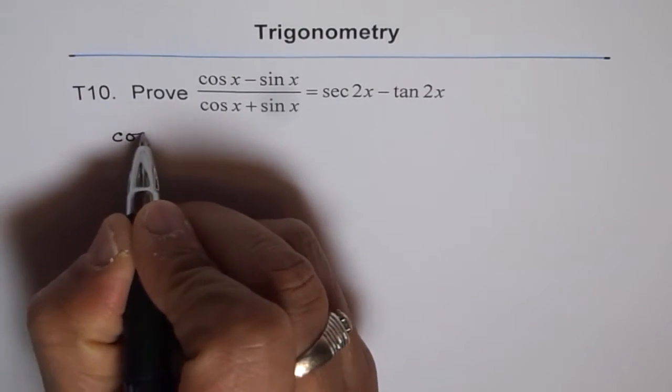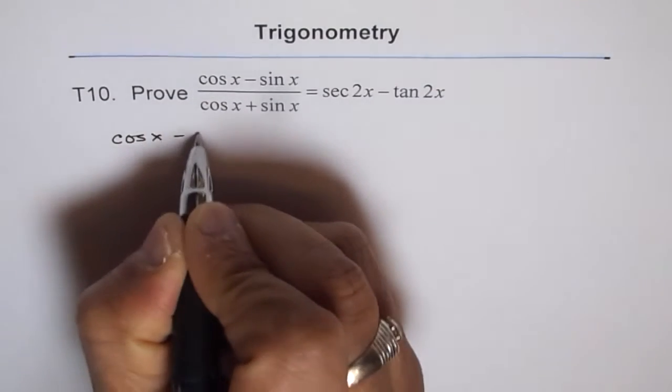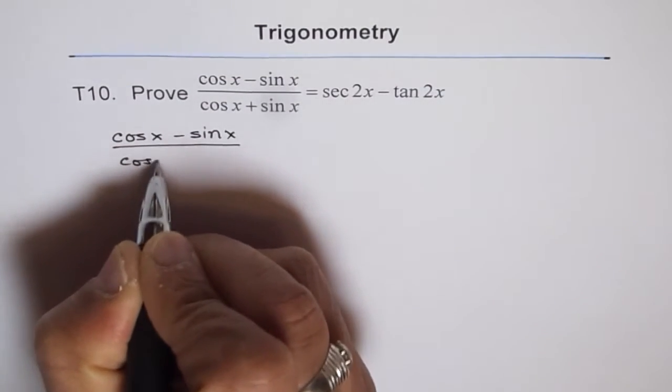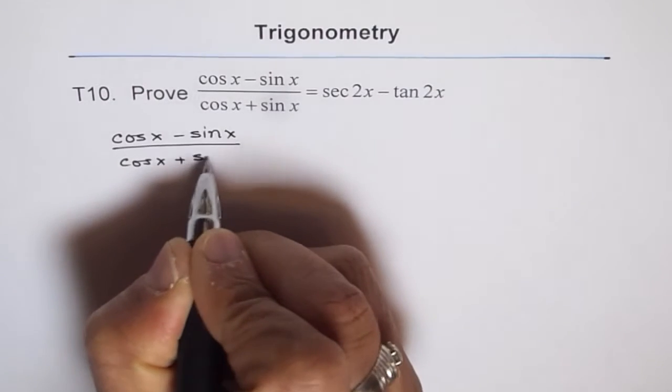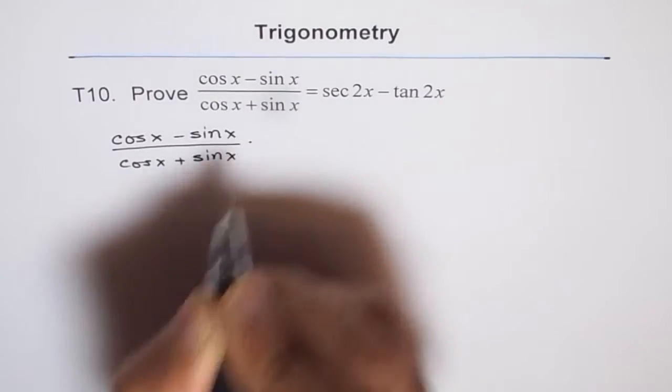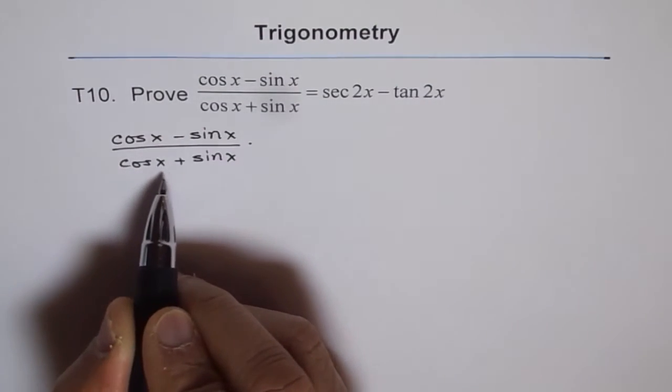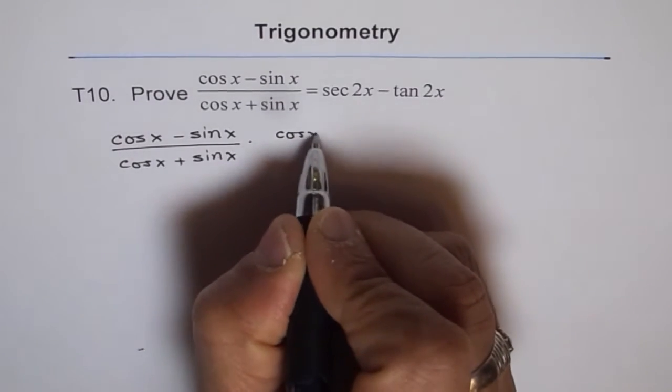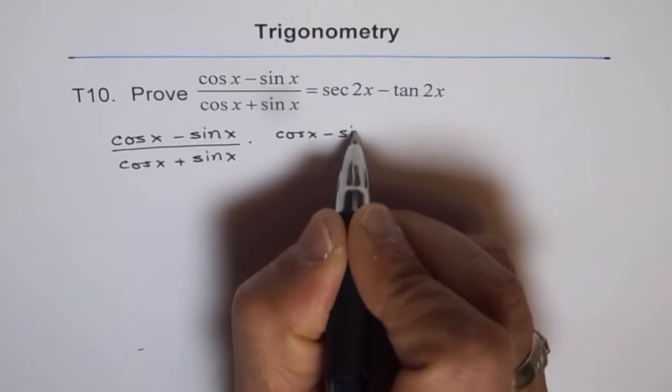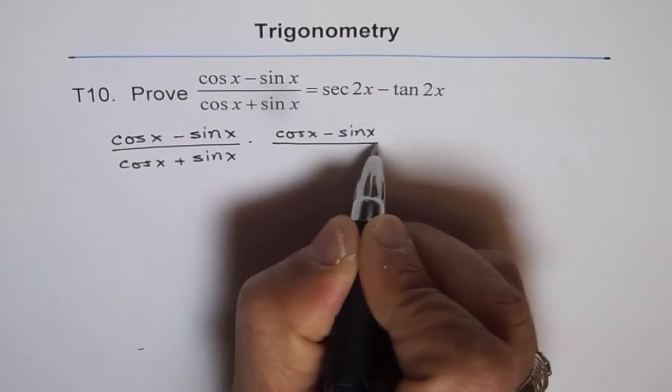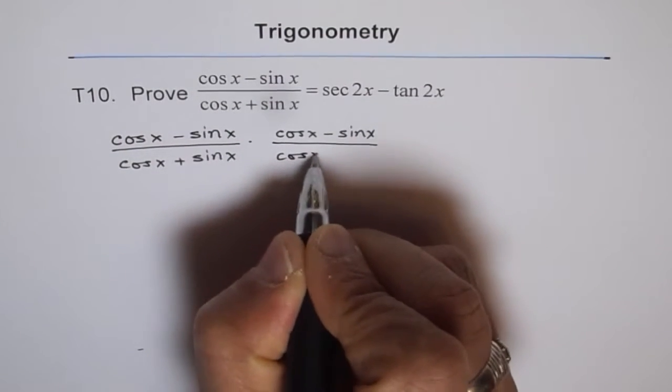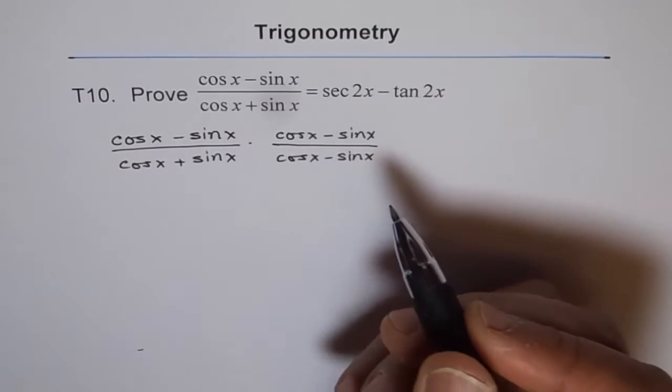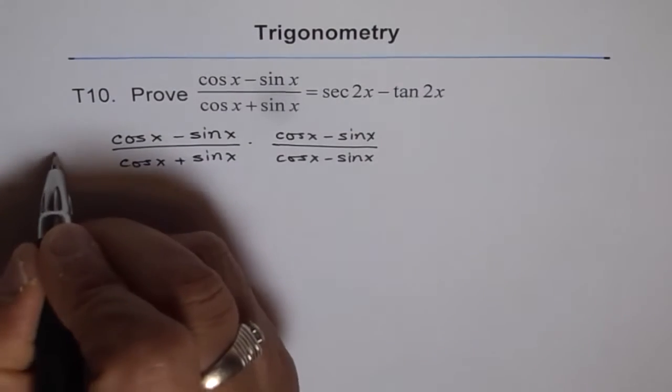So we have this question as cos x minus sine x divided by cos x plus sine x. Rationalize means multiply numerator and denominator by conjugate of this. Conjugate of this is cos x minus sine x. You can always multiply anything by 1. This is just 1. Now that is the left side.